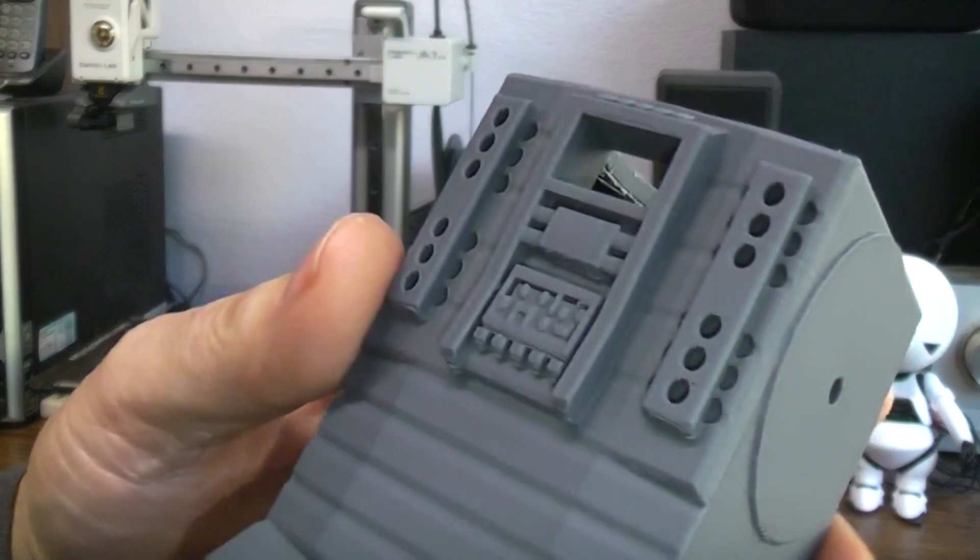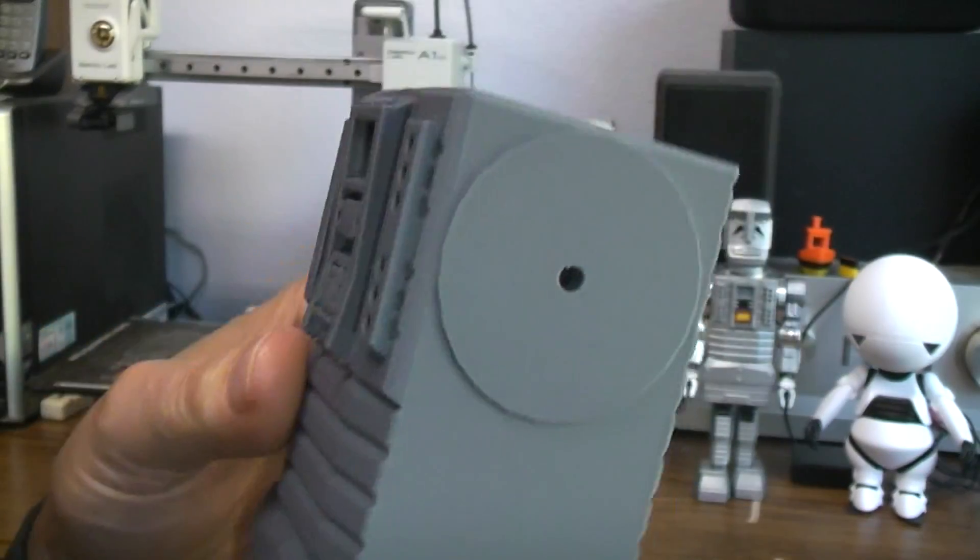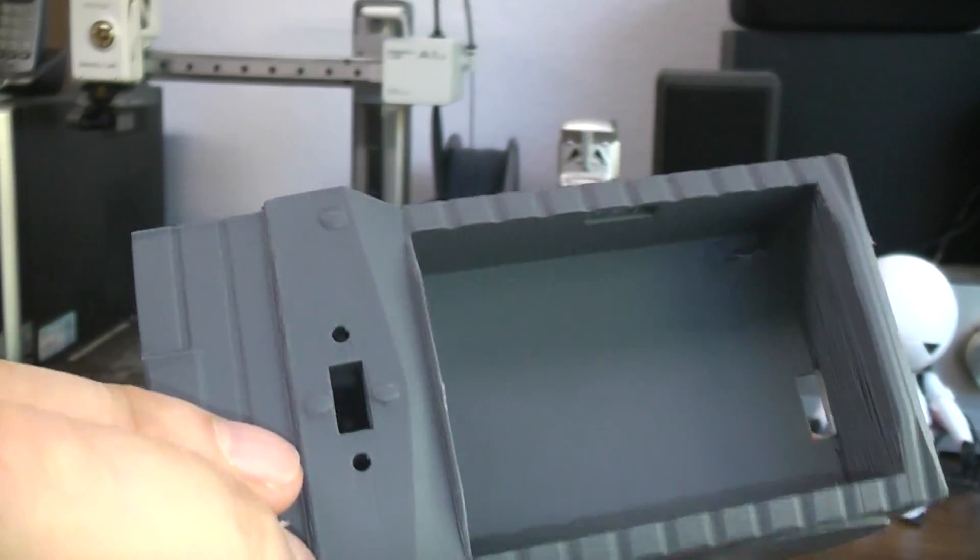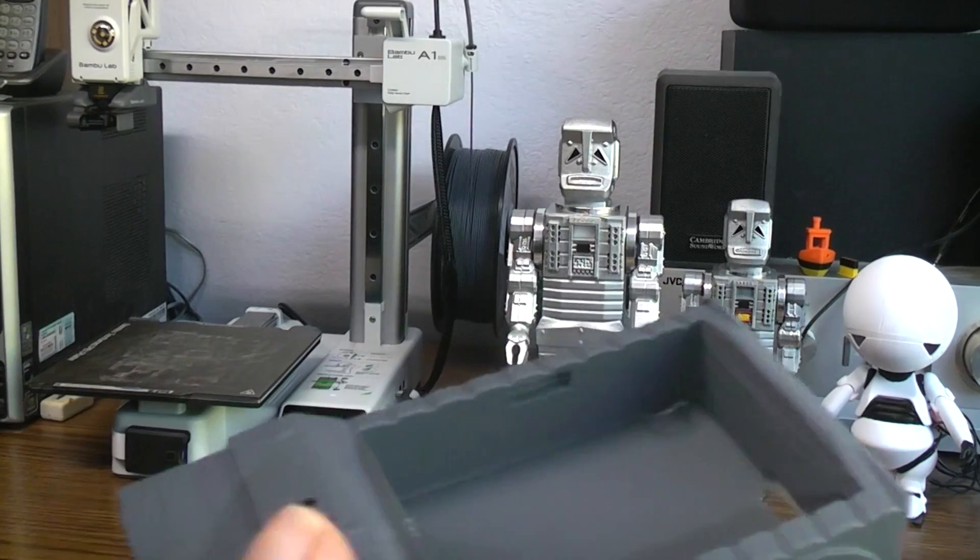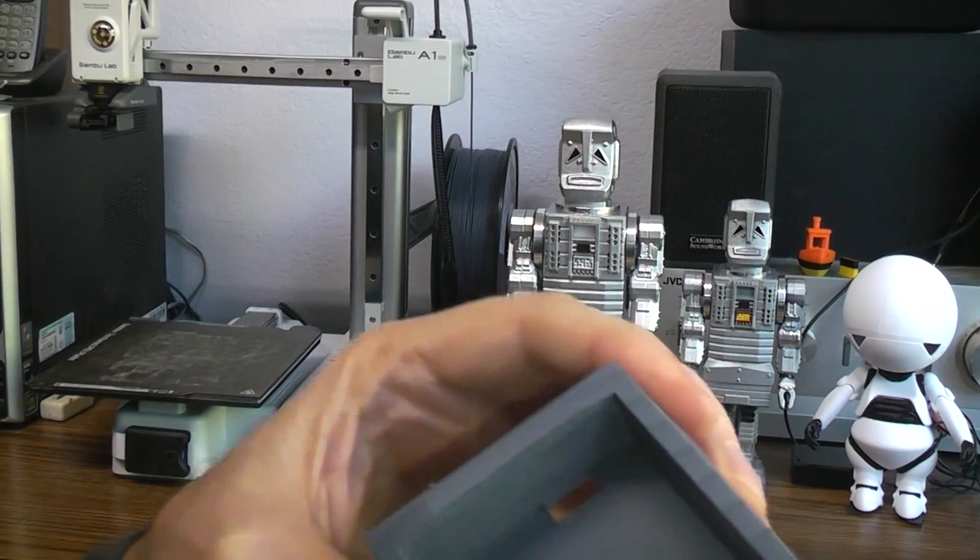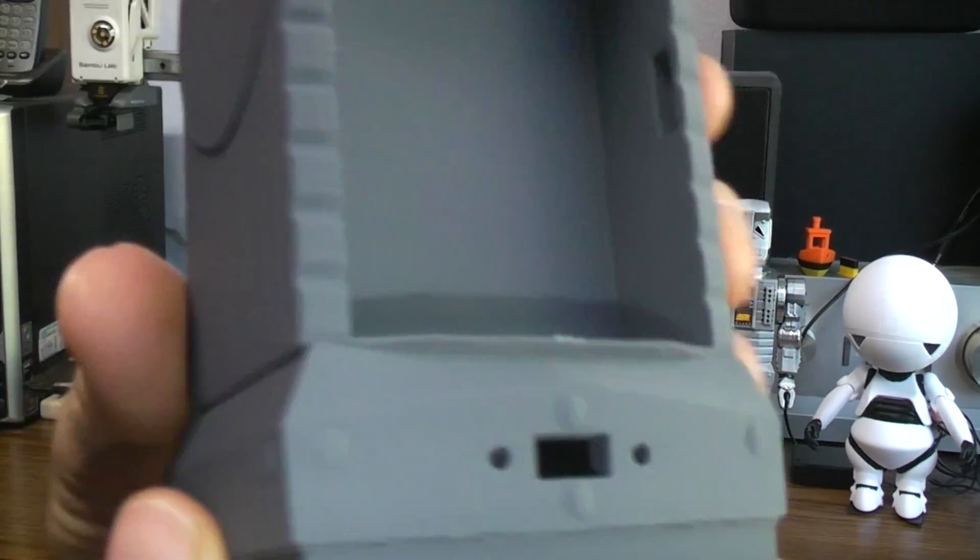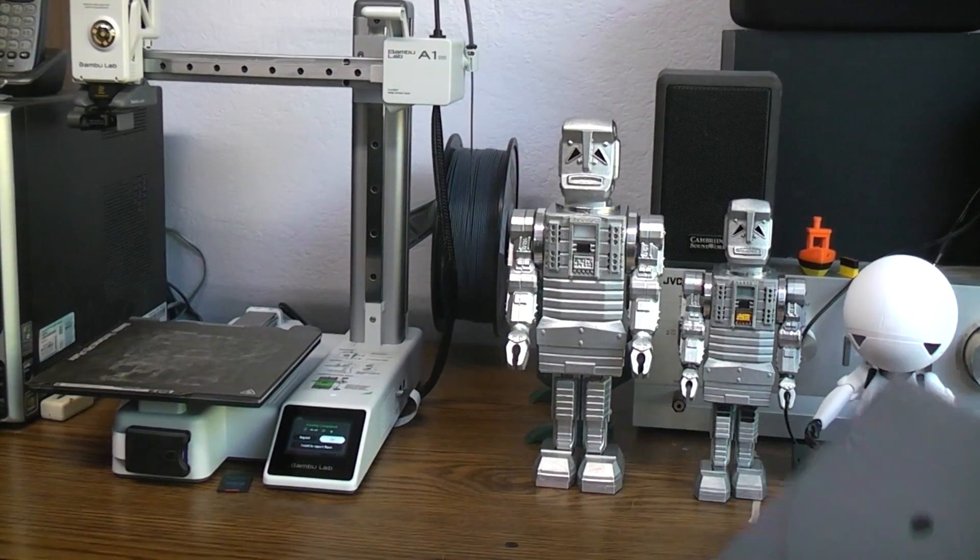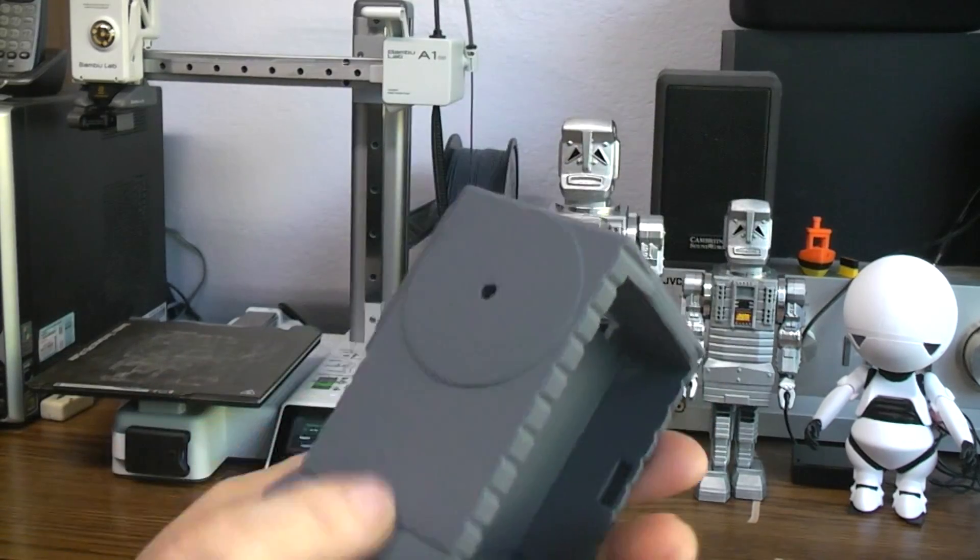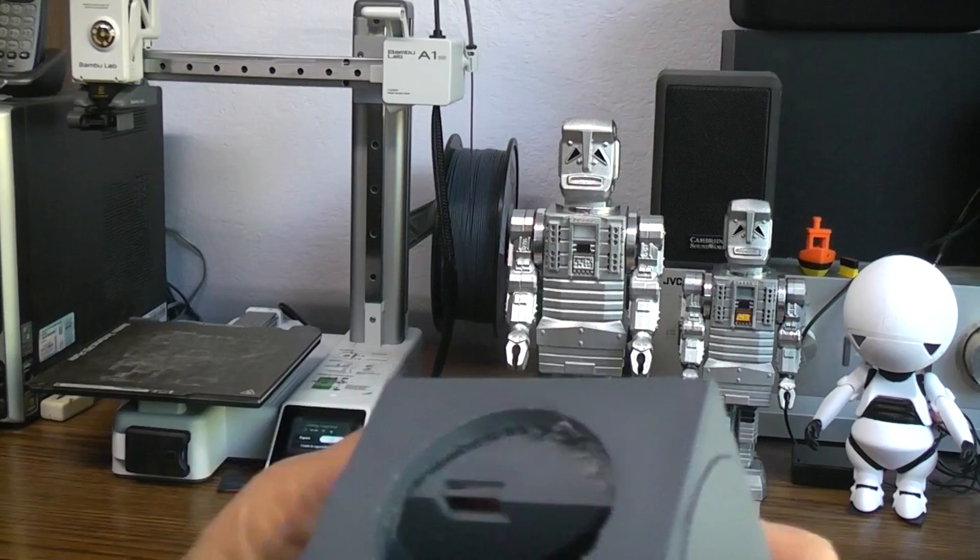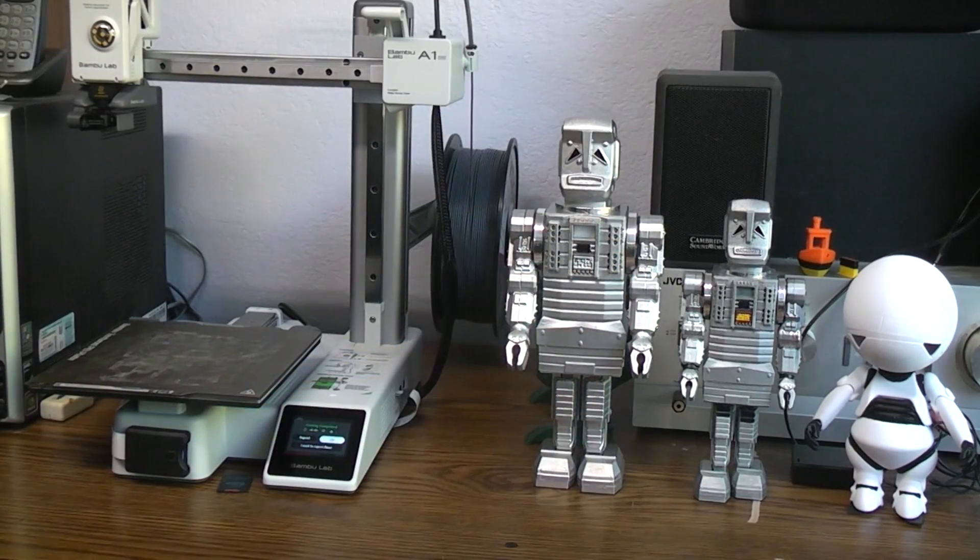So close-up view. No stringing at all, which is nice because my Prusa always has some stringing issues. One little teeny goober up there but nothing to worry about. Support up there worked fine. This is just really nice. So much nicer than even when I was getting off my Prusa, and three times quicker.